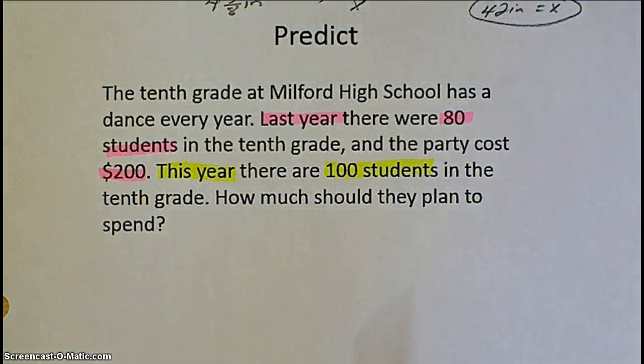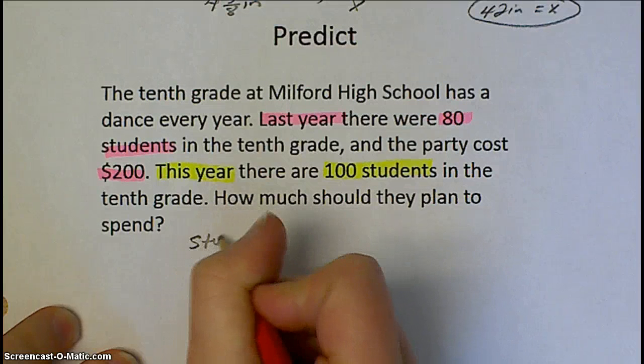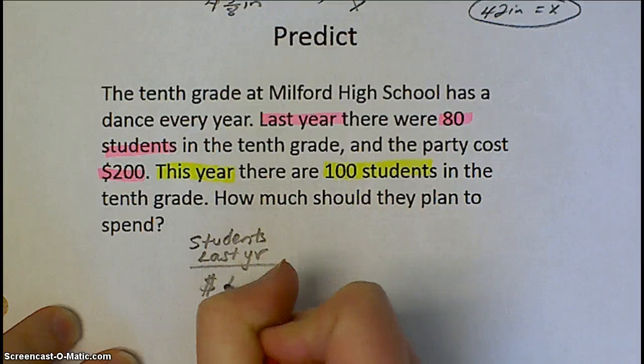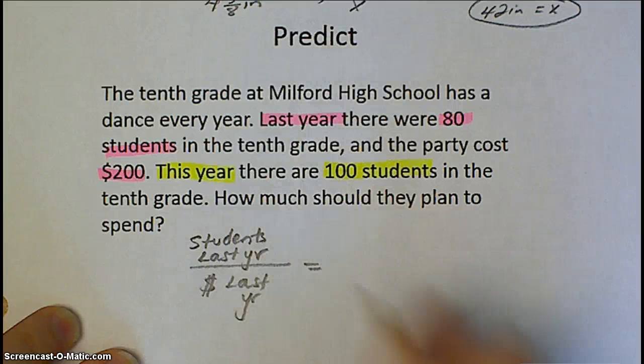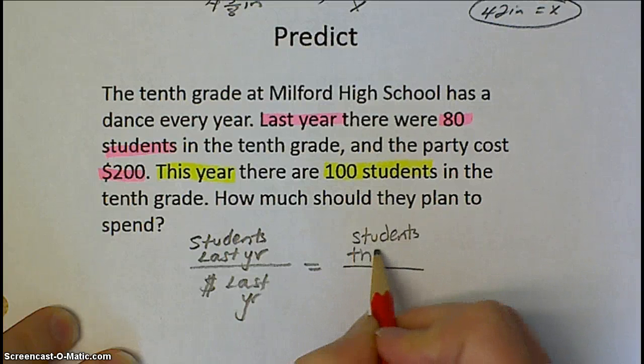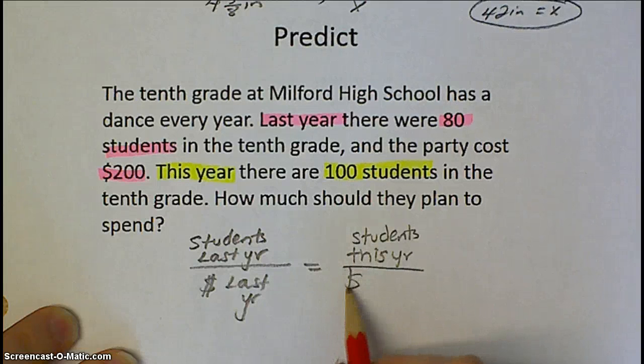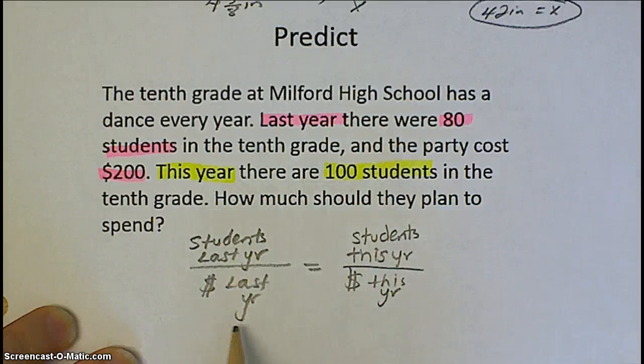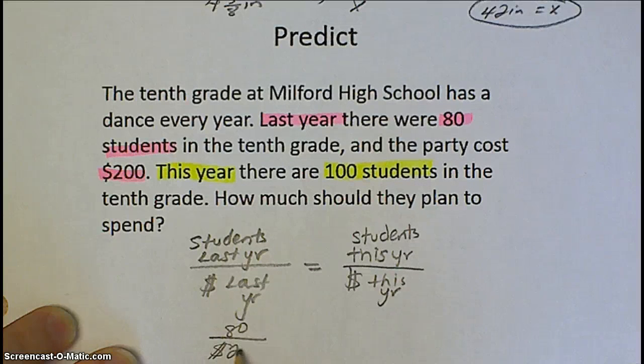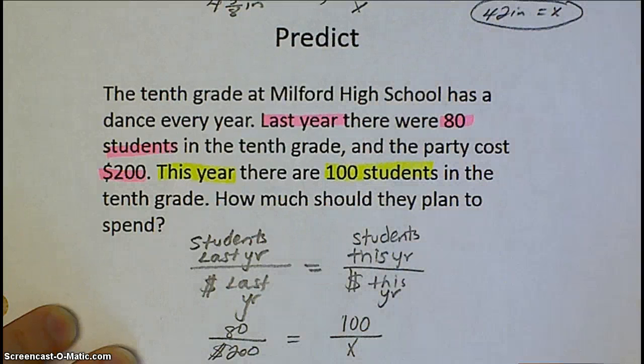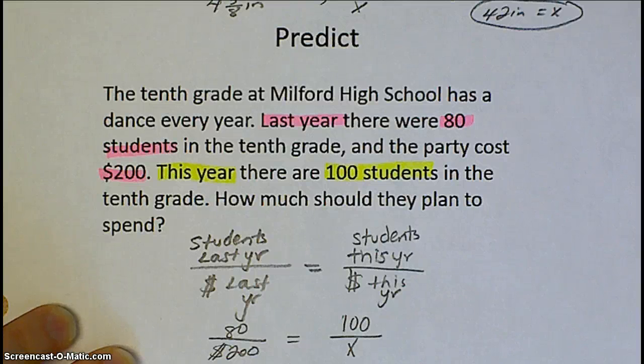So same thing as last problem. I would set it up with words first. So students last year to money last year. And that ratio is going to have to be equal to students this year and the cost for this year. And then you plug in your numbers. So last year there was 80 students, cost $200. This year there's 100 students, and we don't know how much it's going to cost. Go ahead, pause the video, do your cross products, and then resume when you're ready to find out if you got it right.